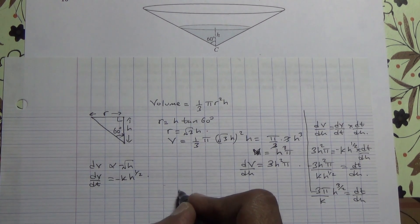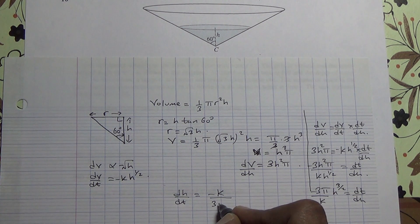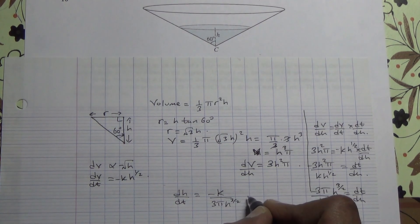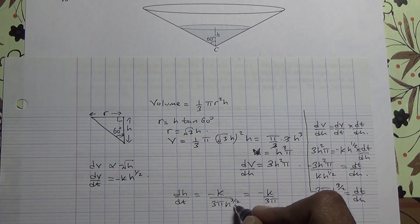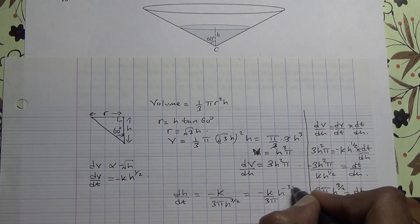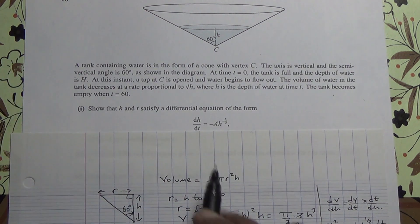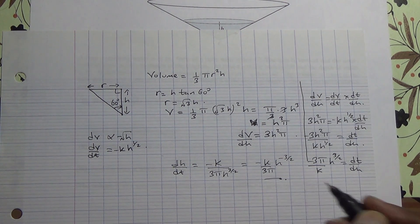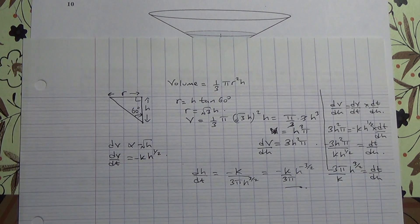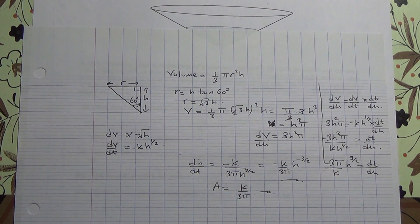We can invert this to say dh/dt equals negative k over 3 pi times h to the power of minus 3 over 2, using the laws of indices. This resembles the required form, so dh/dt equals negative a times h to the power of minus 3 over 2, where a equals k over 3 pi. This is a positive constant, so the first part has been shown.